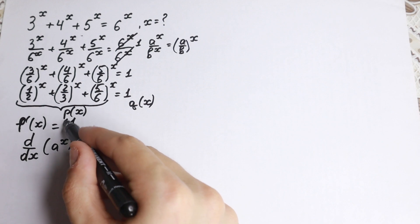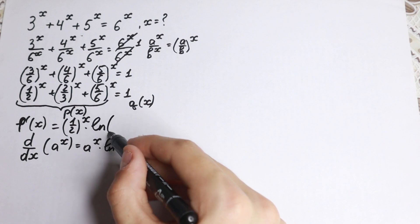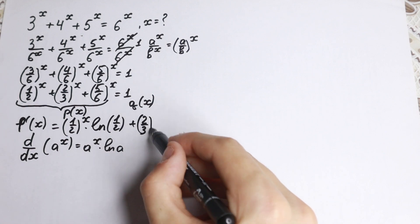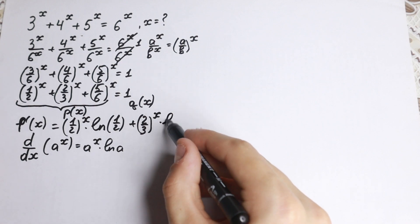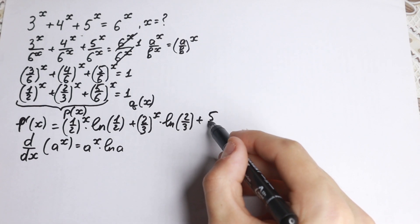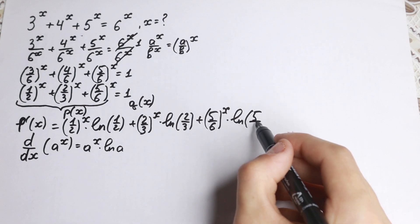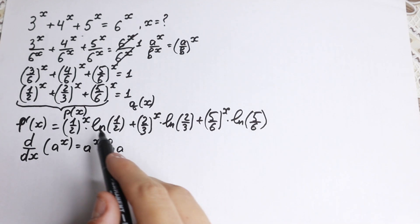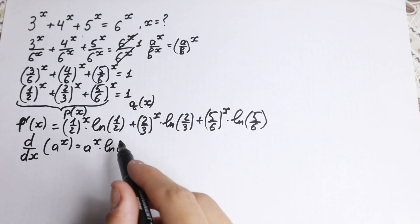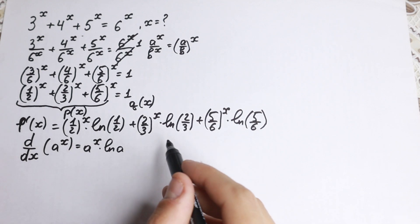Finding the derivative of the left-hand side, we get: one half to the power x times natural log one half, plus two thirds to the power x times natural log two thirds, plus five over six to the power x times natural log five over six. Now let's find the sign of this derivative.